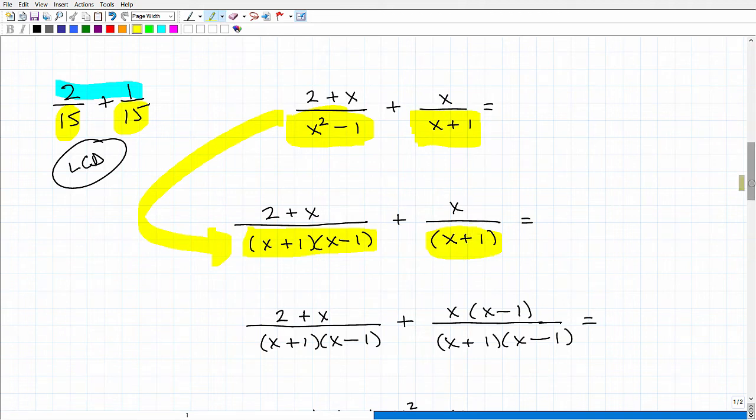So now to fix up this problem such that each of these fractions have the same denominator, what's missing? Well, I have an x + 1 here, and I have an x + 1 here.